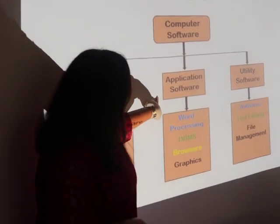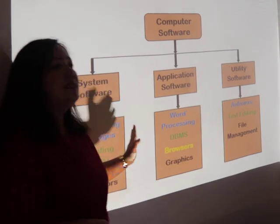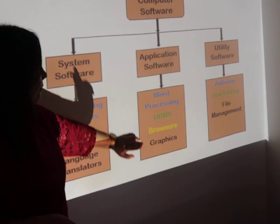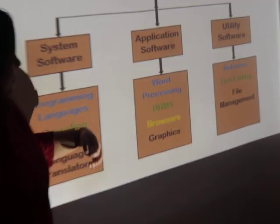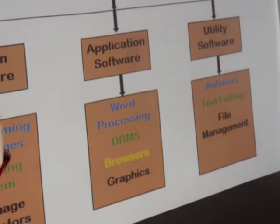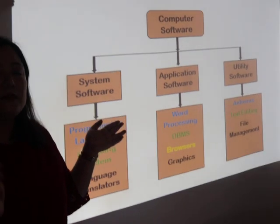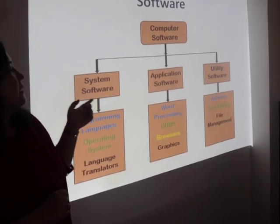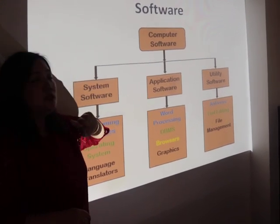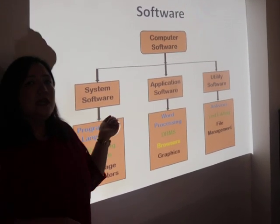Another type of software is application software. As the name suggests, this software is basically designed for the end user to cater to a particular environment. Here we see various examples like word processing software, database management system, and browser software. Application software can come as a single program — for example, Notepad, which is used for creating and editing text.